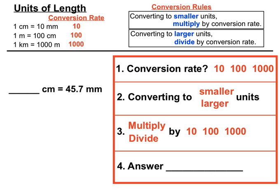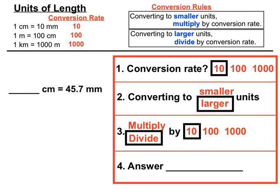Next example: how many centimetres in 45.7 millimetres? This time we're converting into centimetres, which is a larger unit. The conversion rate between centimetres and millimetres is 10. Since we're converting into a larger unit, we divide by 10. The shortcut is to move the decimal point one place to the left, giving us 4.57. So 45.7 millimetres converts to 4.57 centimetres.